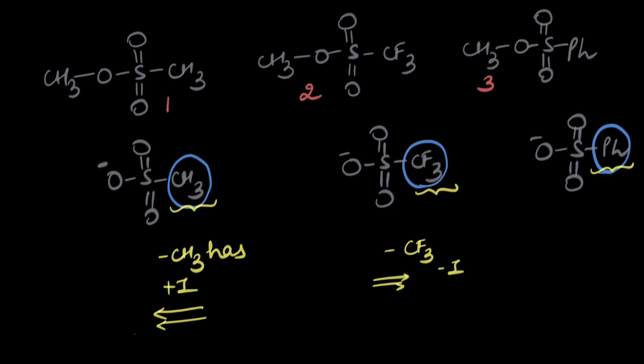What about the third one? A benzene ring is attached. Benzene carbon has sp2 hybridization. The more the percentage s-character, the more the electronegativity and the more the ability to pull electron density via the sigma bond. So the benzene ring also depicts a minus I effect.